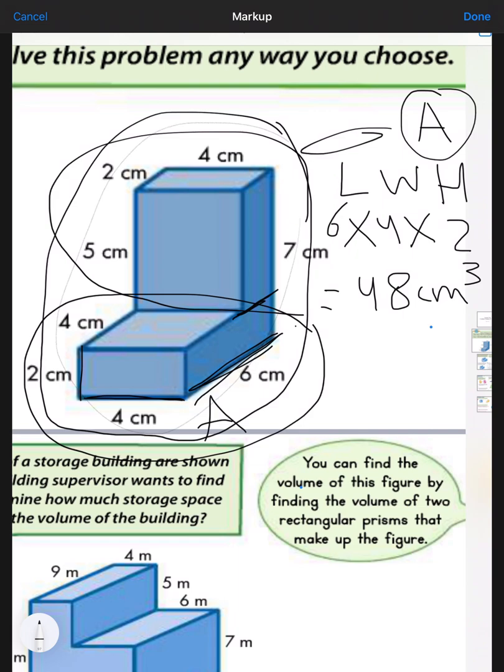Concerning the second prism, prism B, it has the same width which is 4. The length is 2, so we have 4 multiply 2 multiply the height. What is the height of this prism? We can say it's 5. So 4 multiply 2 multiply 5 equals 40 cm³.